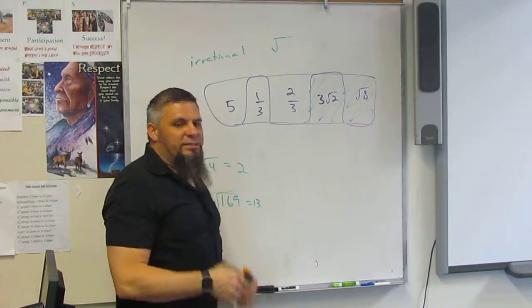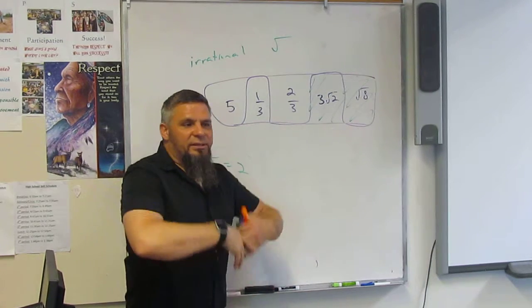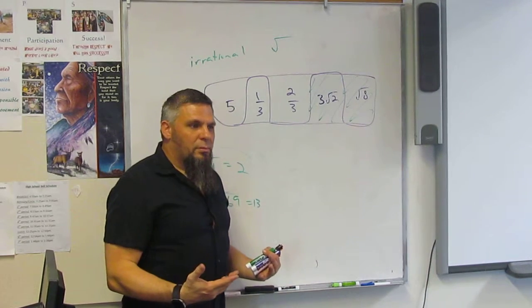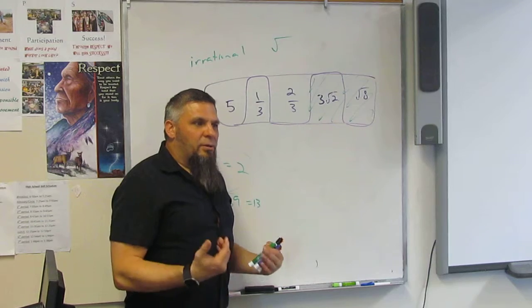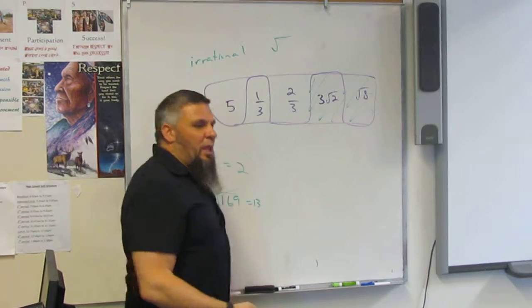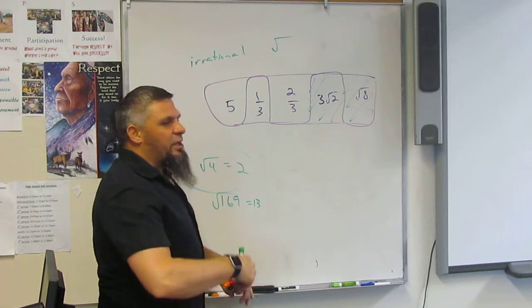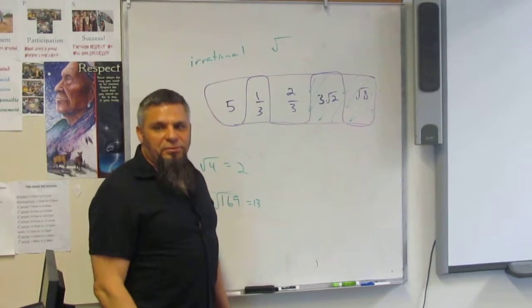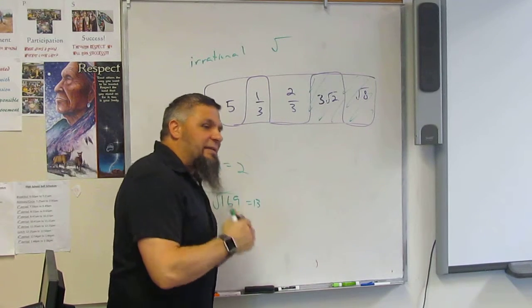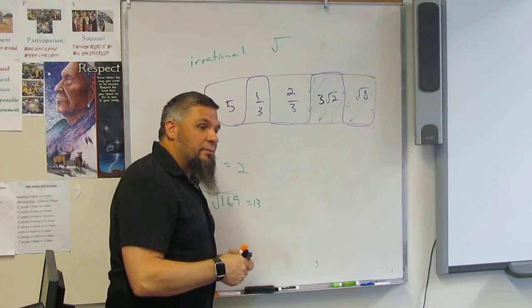A decimal that ends is rational. Does that make sense? The only thing irrational is when you have a cubic or a square root or a fourth root of something that doesn't come out nice and neat.